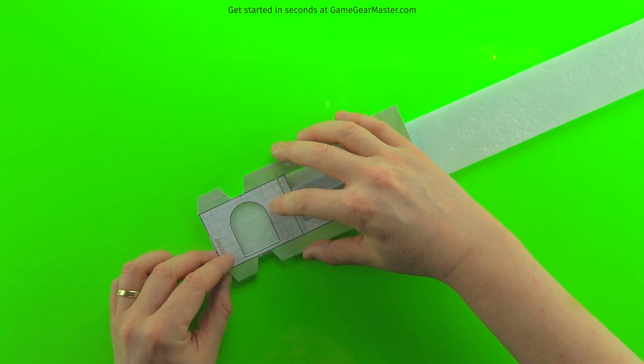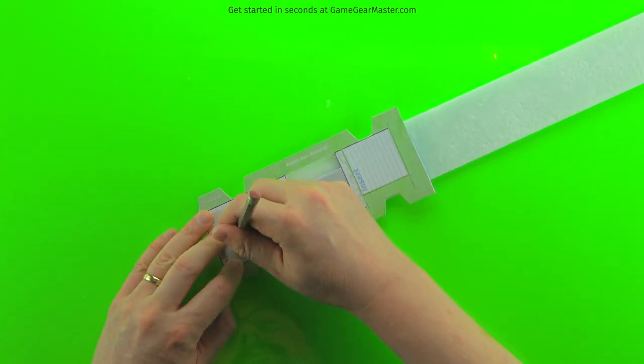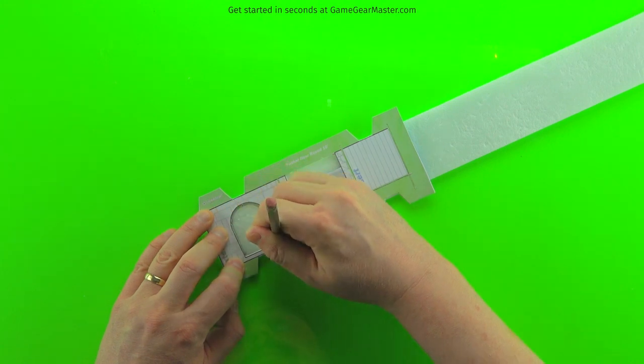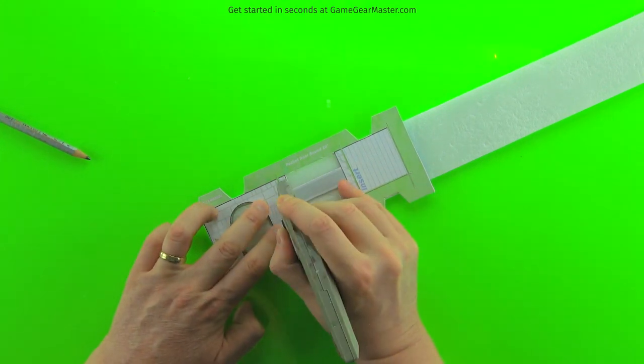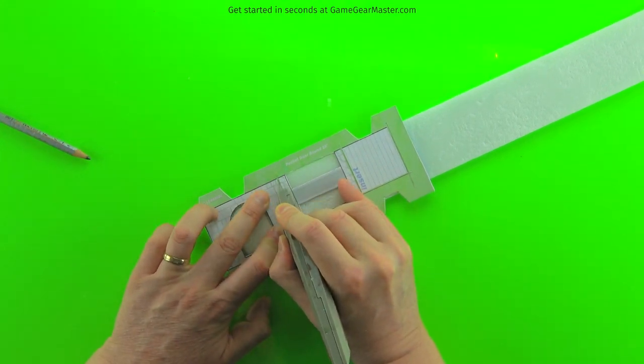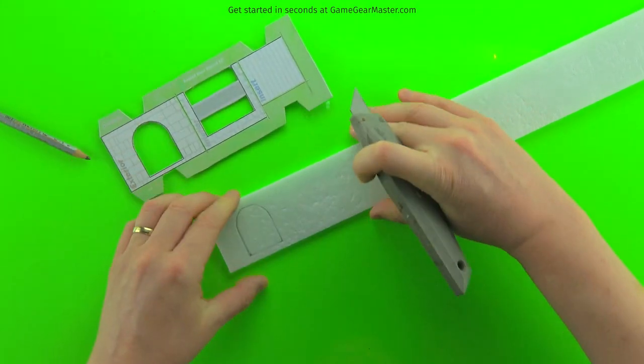We'll start by cutting out two exterior wall pieces. And you can just trace out that arch doorway there. You can also cut it directly, but it is a little harder to cut something like a circle with the knife. So sometimes I prefer to trace out more complex items to cut out.